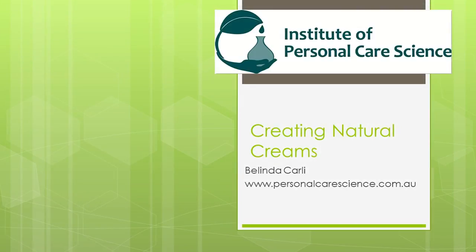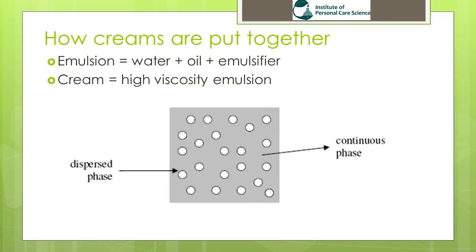Now let's take a look at how we put a natural cream formula together. A cream is an emulsion, and an emulsion is composed of water and oil held together by an emulsifier. Creams are high viscosity emulsions — the dispersed phase is the oily phase homogeneously distributed throughout a continuous water phase. That is your emulsion, and when we make it high viscosity we consider it to be a cream.